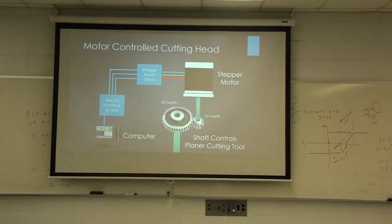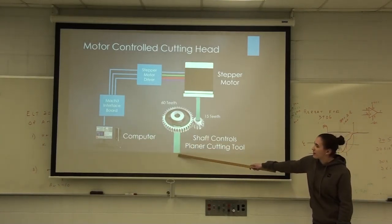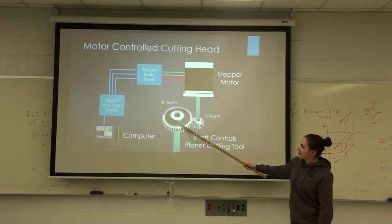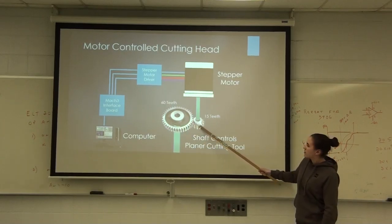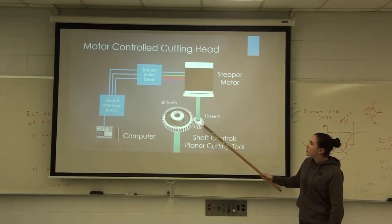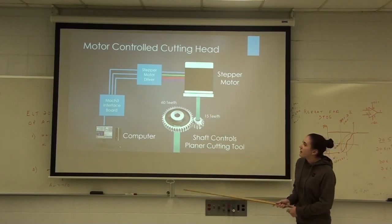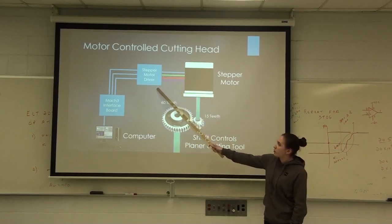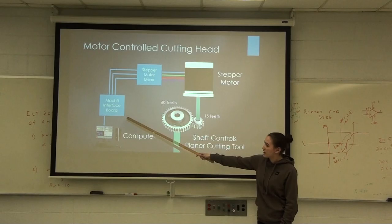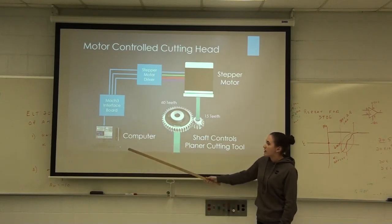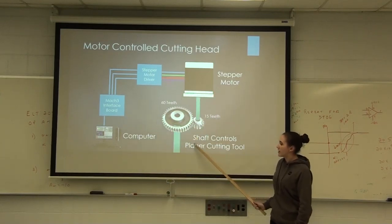And then this is just a little diagram of my subsystem. So this is the shaft that comes off the planer. I have a 60 tooth gear on it that goes to a 15 tooth gear that goes to my stepper motor. That is then run by a stepper motor driver. And then feeds to a Mach 3 interface board. And so you can then control all of this by the computer.